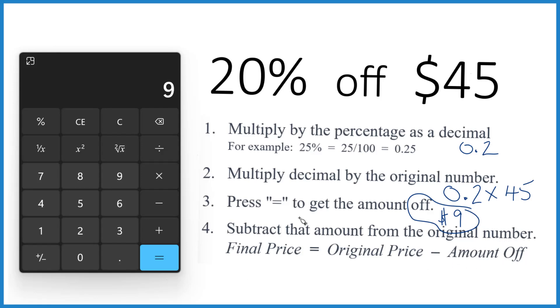But you might want to know, what is the final price? You take the original, that's the $45 minus the amount you got off. That's the $9. And 45 minus 9 is $36. So $36. That's the final price you'll pay if you get 20% off of $40.